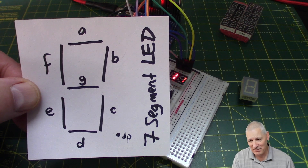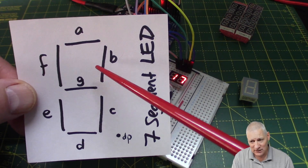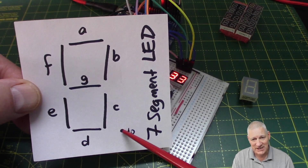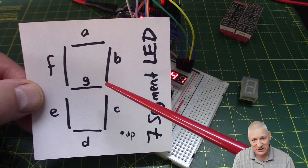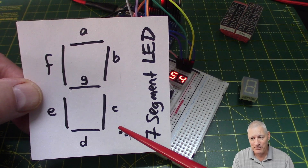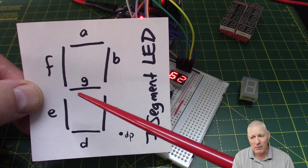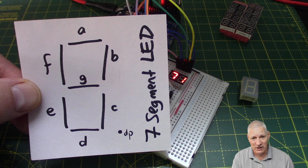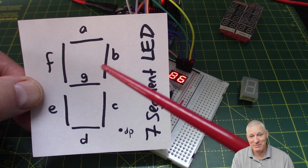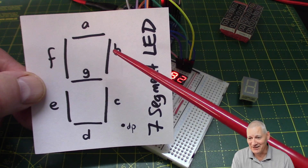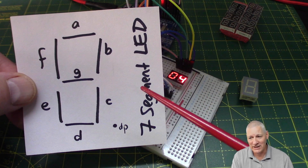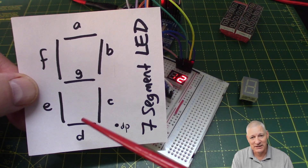Seven-segment LED digits are nothing magical — they're just seven individual LEDs, numbered A through G all the way around in a clockwise fashion, with G in the middle. There's usually a decimal point or a colon, which is the eighth bit — the eighth GPIO line you'll need to drive. They're arranged in a digit format so we can display numbers 0 through 9 and A through F in hexadecimal. The GPIO pins driving all this have no idea we're displaying something readable as a 2 or an 8; it's just a number of LEDs being lit at any one time.